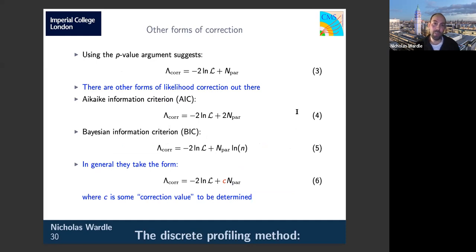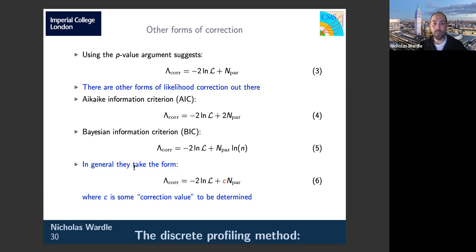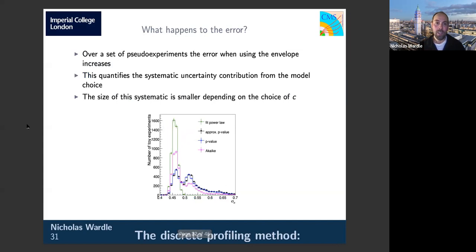The other forms of correction include the approximate p-value correction, which simply increases the log-likelihood ratio by the number of parameters in the fit; the AIC (Akaike Information Criterion), which adds two to the log-likelihood ratio for each parameter; and the BIC (Bayesian Information Criterion), which adds log(n) times the number of parameters. In general, they all take the form of correcting the log-likelihood ratio by a constant times the number of parameters.